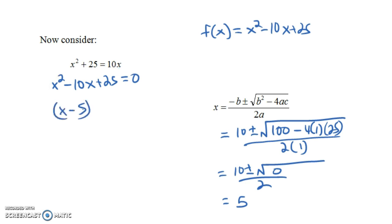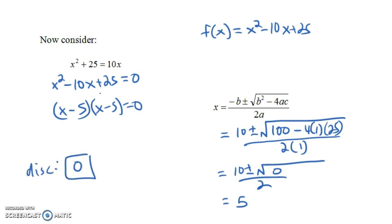In fact, you can factor this: (x - 5)(x - 5) = 0, confirming the only solution is x = 5. The discriminant here — b² - 4ac — is (-10)² - 4(1)(25) = 100 - 100 = 0.